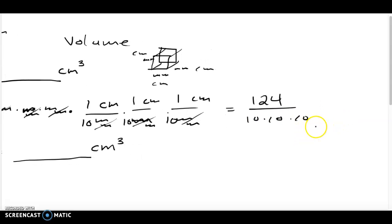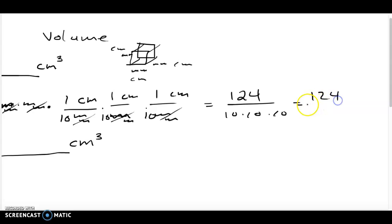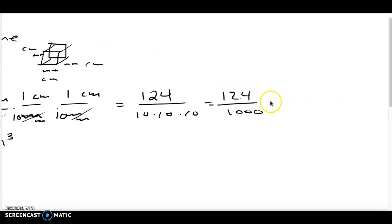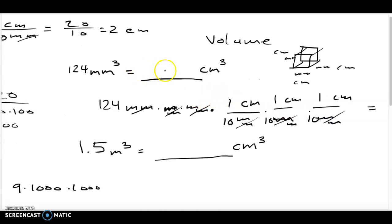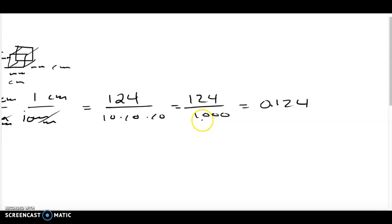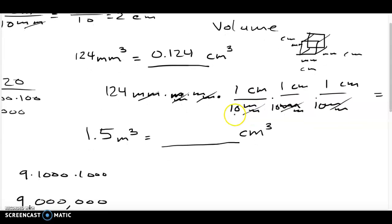124 divided by 1,000 gives 0.124 centimeters cubed. Another way to think about it: dividing by a factor of 10 in the metric system moves your decimal point. Three zeros means the decimal moves three places to the left, from the end of 124 over three spots. It's fine to use a calculator, but that's a helpful mental shortcut too. So our answer is 0.124 cm cubed.